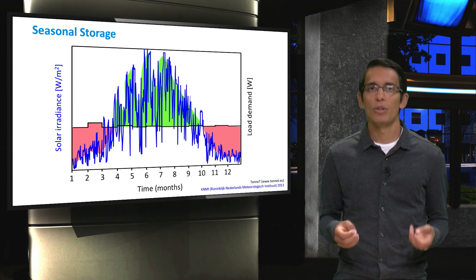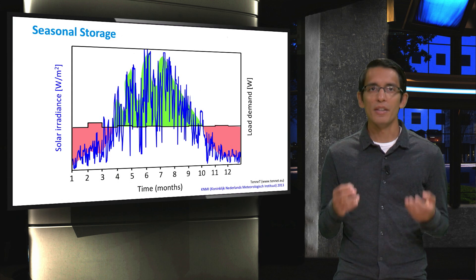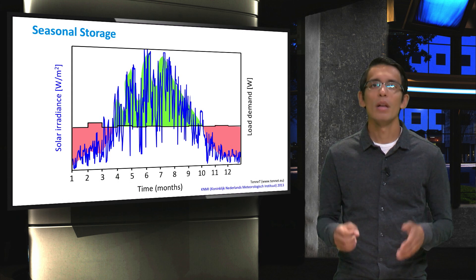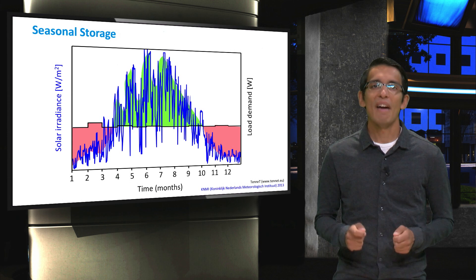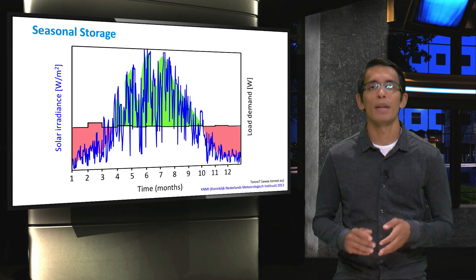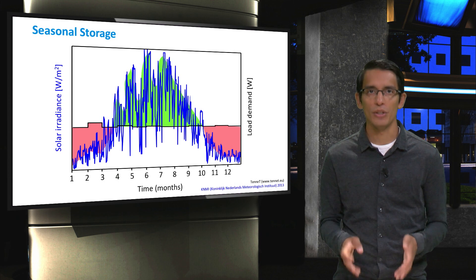You need some type of energy storage to solve this mismatch. If you were to make the PV system large enough for the winter, then the system would be huge and would not be cost effective. Additionally, you would waste a lot of energy in the summertime. Therefore, if you have an electricity system that is totally dependent on PV, you need some storage that can handle these seasonal fluctuations.